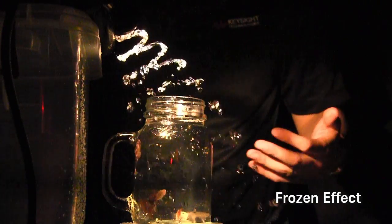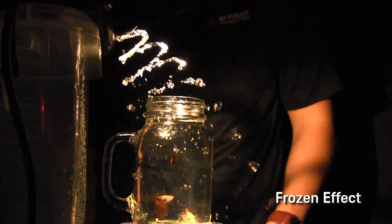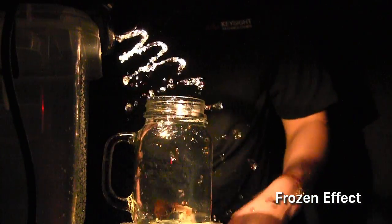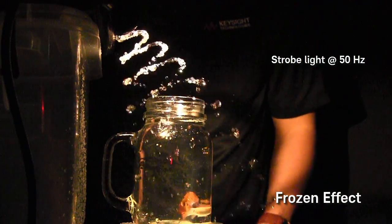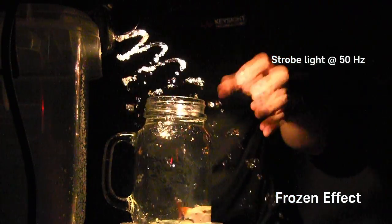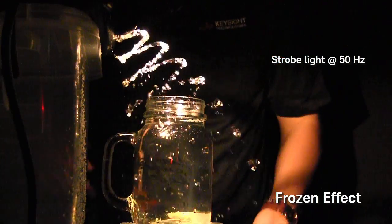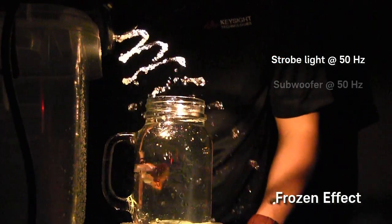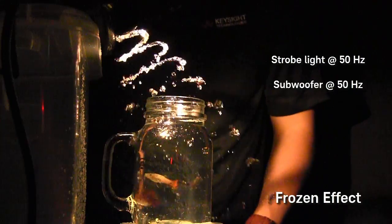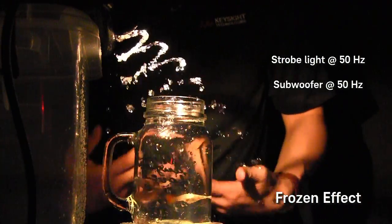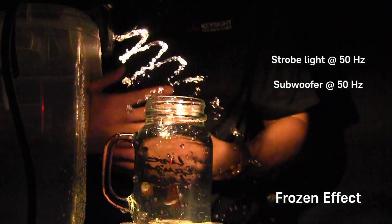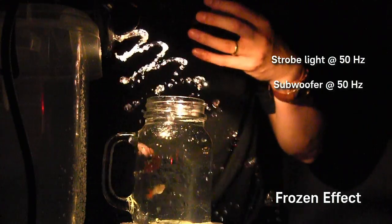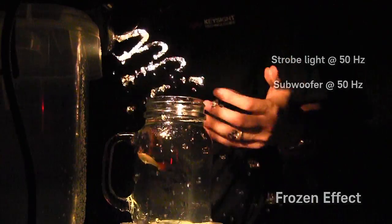And right away, we can actually start seeing this cool water effect. So what's happening is that this little strobe light here is flashing on and off at 50 hertz, 50 times per second. Whereas this subwoofer is vibrating at 50 hertz, which is also 50 times per second. So when they are both at the same frequency, we get this cool standing still in air effect. So it's like it's frozen in air.